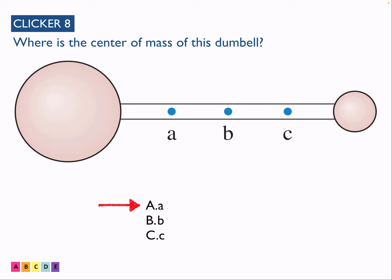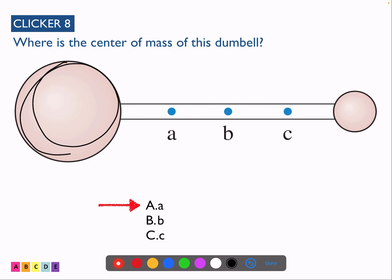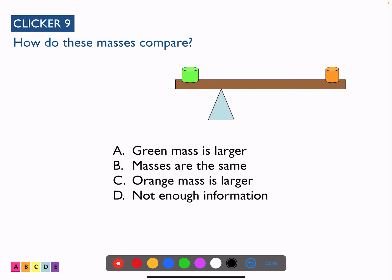The answer is A, and the reason is because over here we have a much bigger mass. Assuming these things are the same material, more mass is over here than over here, so the center of mass should be closer to the big thing rather than the small thing. Using the same reasoning, because the balance point is over here, this mass should be bigger than this mass.